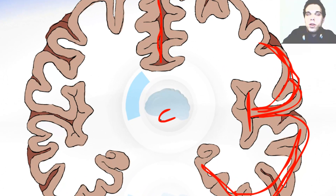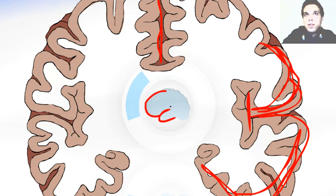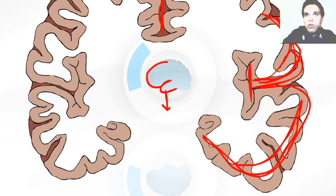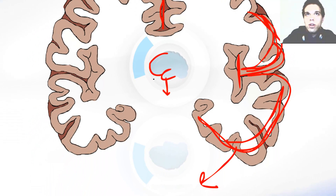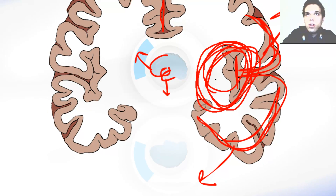So this is the temporal lobe of the brain, and this is the frontal lobe of the brain. If we could just pull this temporal lobe down, or pull the frontal lobe a little bit up, we would be able to see the insula here, and that's exactly this part over here that is enclosed.